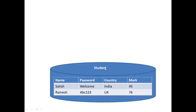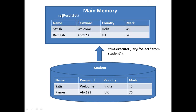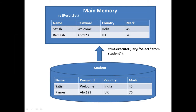Say we have a student table in the database with two records. When we perform stmt.executeQuery('SELECT * FROM student'), the entire table is returned and held in main memory for our application to process. We create a ResultSet object to hold this table, and there will be a cursor pointing to the current record. We can search the table, print records, and do many operations.